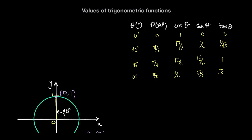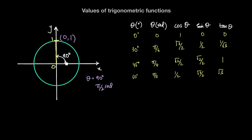The last value is when theta equals 90 degrees, or pi over 2 radians. The radius is perfectly vertical, and since the point lies on the y-axis, the x-coordinate is 0 and the y-coordinate is 1. So cosine of theta is 0 and sine of theta is 1. The tan of 90 degrees is sine of 90 divided by cosine of 90, which is 1 divided by 0 — and since we can't divide by 0, tan of pi over 2 radians is an undefined value.